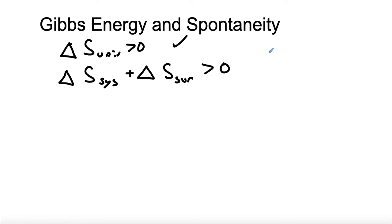It's a little bit inconvenient to constantly be looking at what's delta S for the system, now I'm going to calculate it for the surroundings, let's add those, is that sum greater than zero? So it would be nice to develop a function where we could just concentrate on the system.